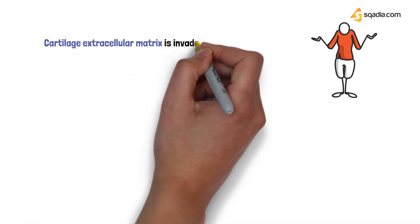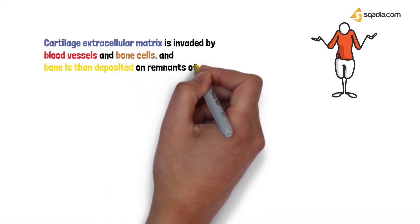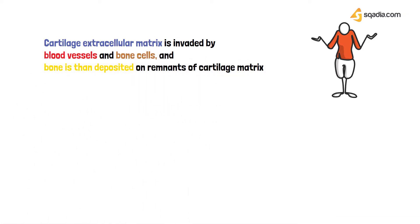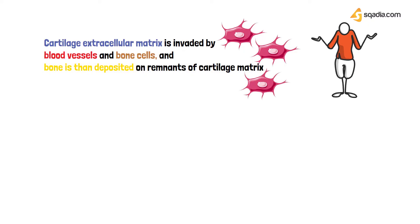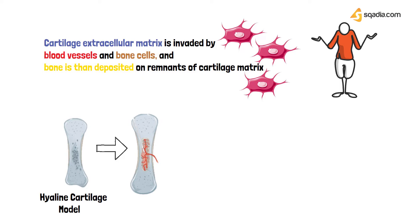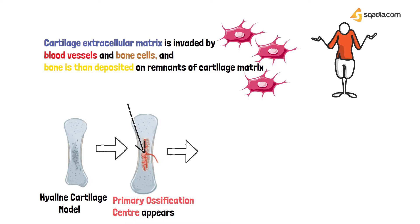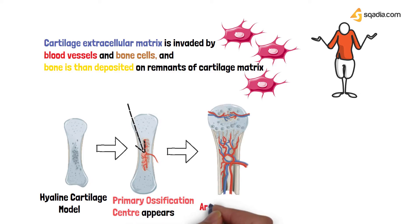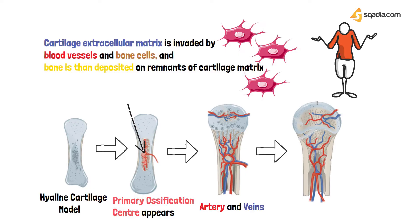In endochondral ossification, the extracellular matrix of the cartilage is invaded by blood vessels and bone cells — consisting of osteoblasts, osteoclasts, and bone marrow cells — which deposit on the cartilage leading to ossification. Diagrammatically, a hyaline cartilage model acts as a mold, a primary ossification center appears, blood vessels invade, and osteoblasts, osteoclasts, and bone marrow cells come in and eventually form complete compact bone.